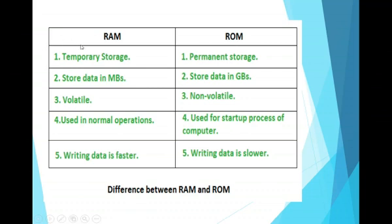RAM is temporary storage memory but ROM is permanent storage memory. RAM stores data in megabytes but ROM stores data in gigabytes. RAM is volatile in nature, whereas ROM is non-volatile in nature.